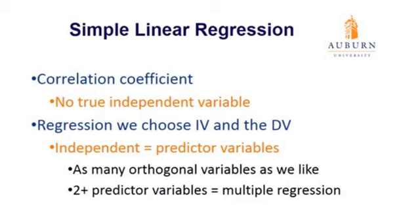We can have as many predictor variables as we like, as long as they're uncorrelated with each other. When we say that, we mean they are orthogonal to each other — orthogonal means uncorrelated or unrelated. We can have as many predictor variables as we like as long as they're orthogonal. If we have more than one predictor variable, then we call it multiple regression, something we'll talk about later.